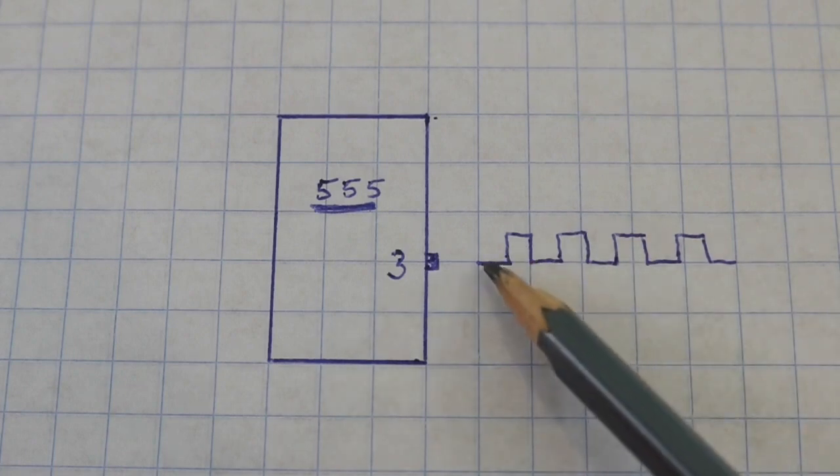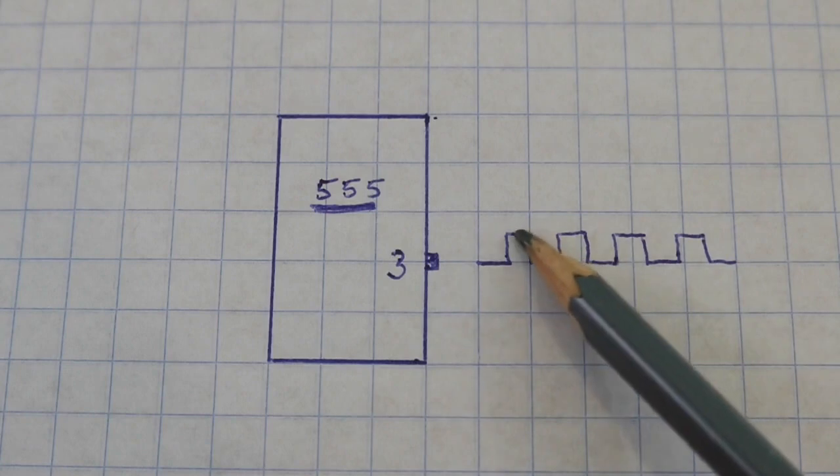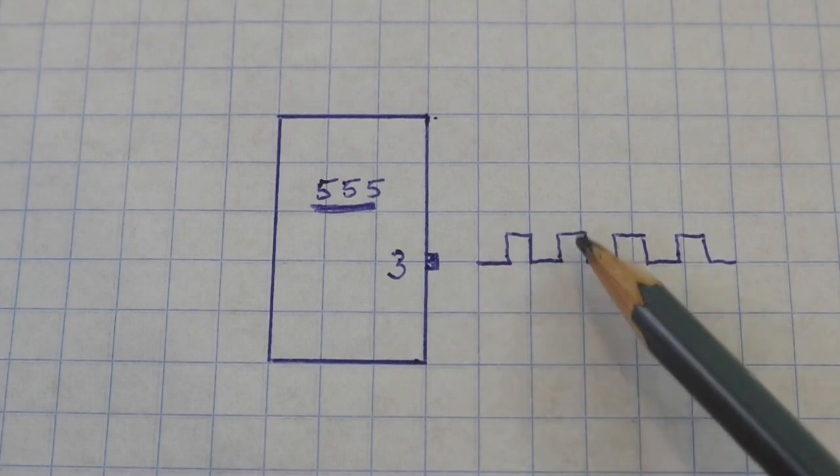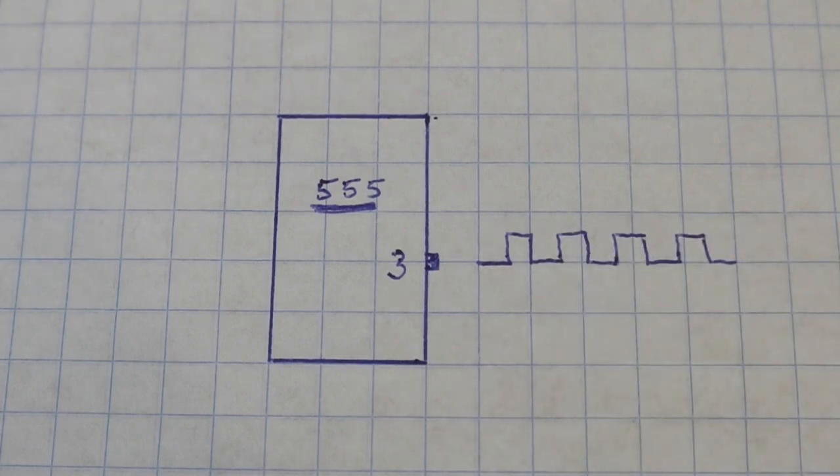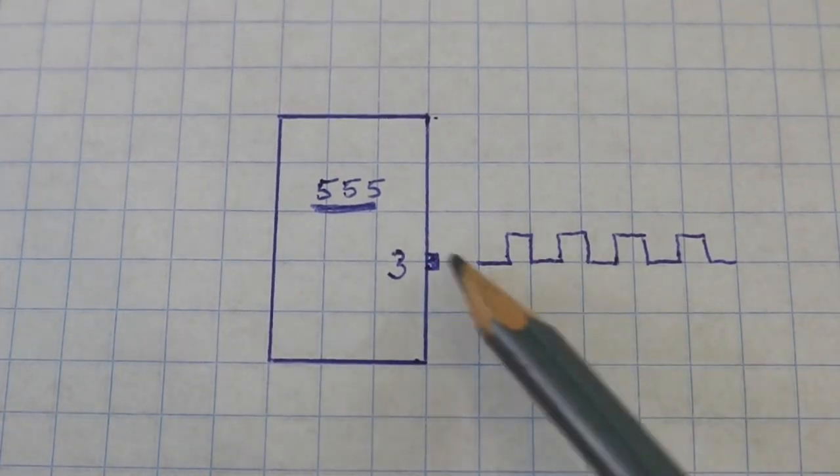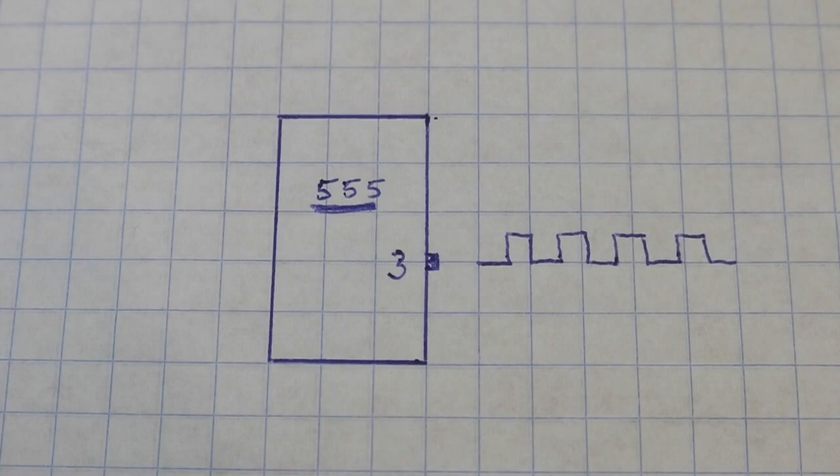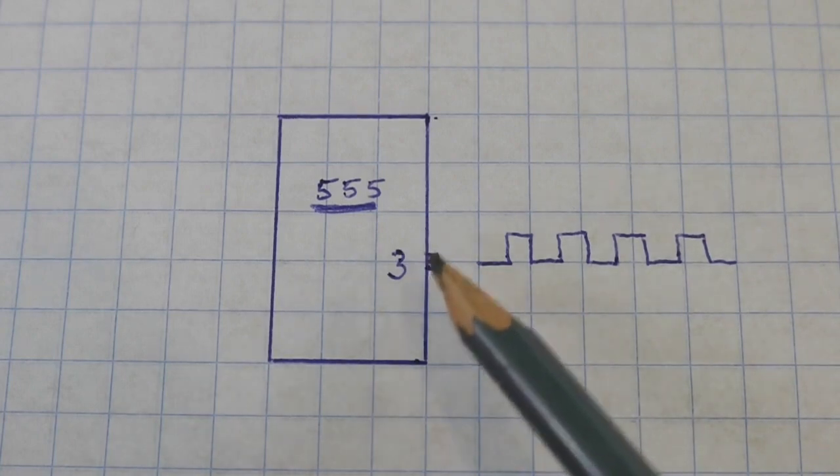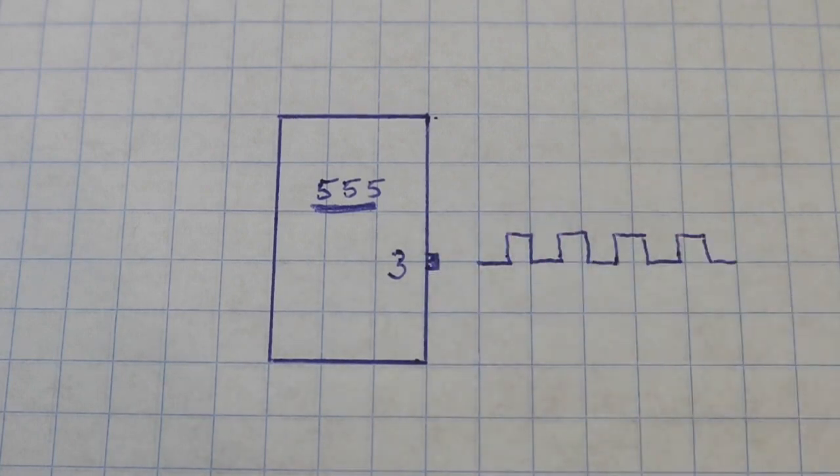That is, we go from zero voltage to a maximum, zero, maximum, and so on. That means that if we have a load connected to pin 3, a current will flow from pin 3 to the load and then to ground.